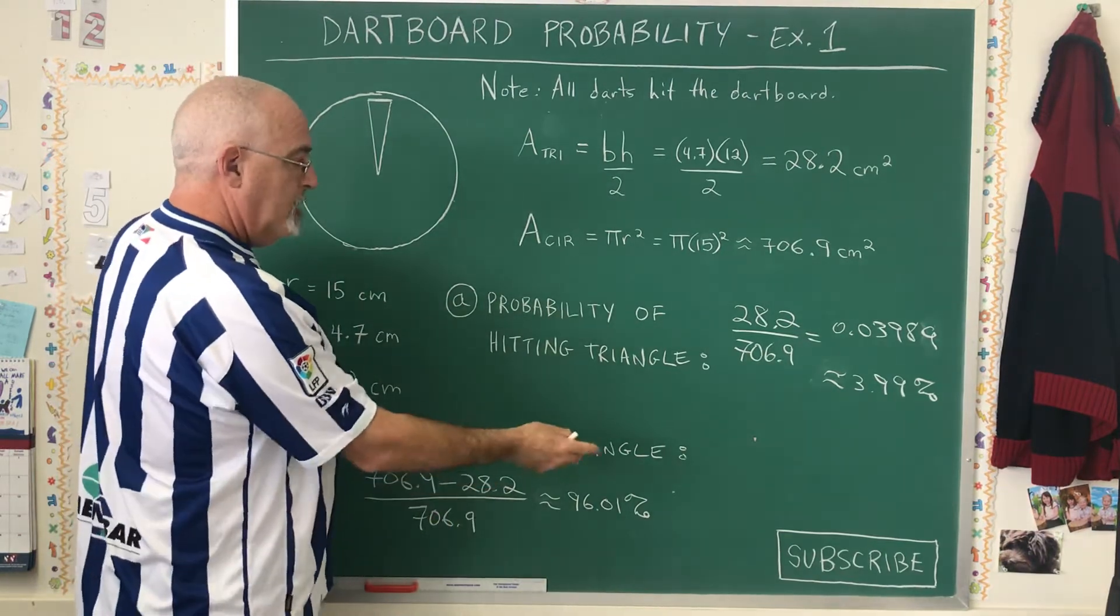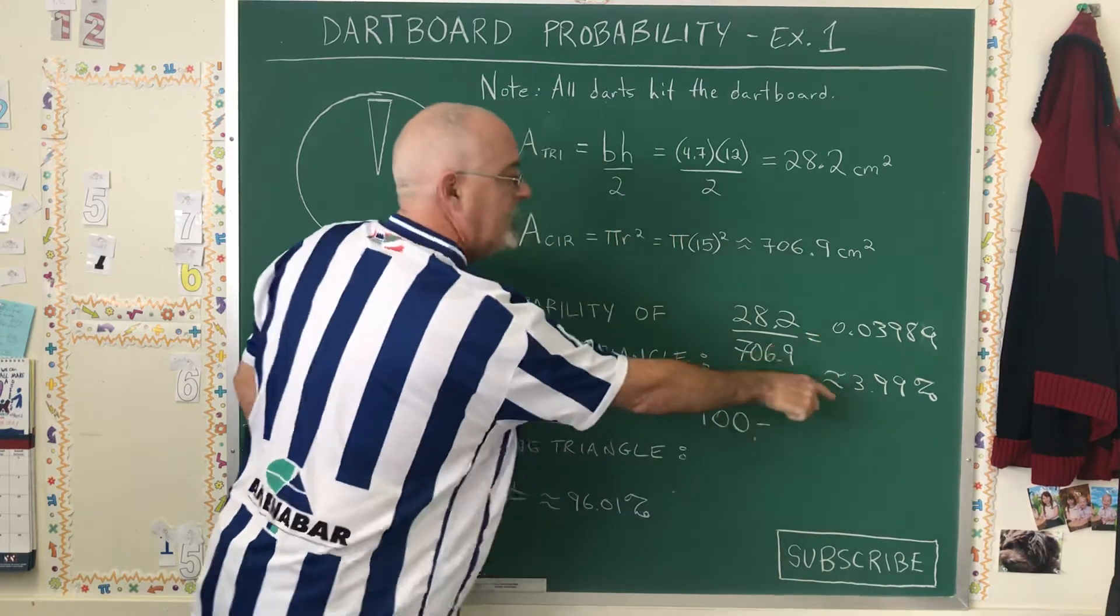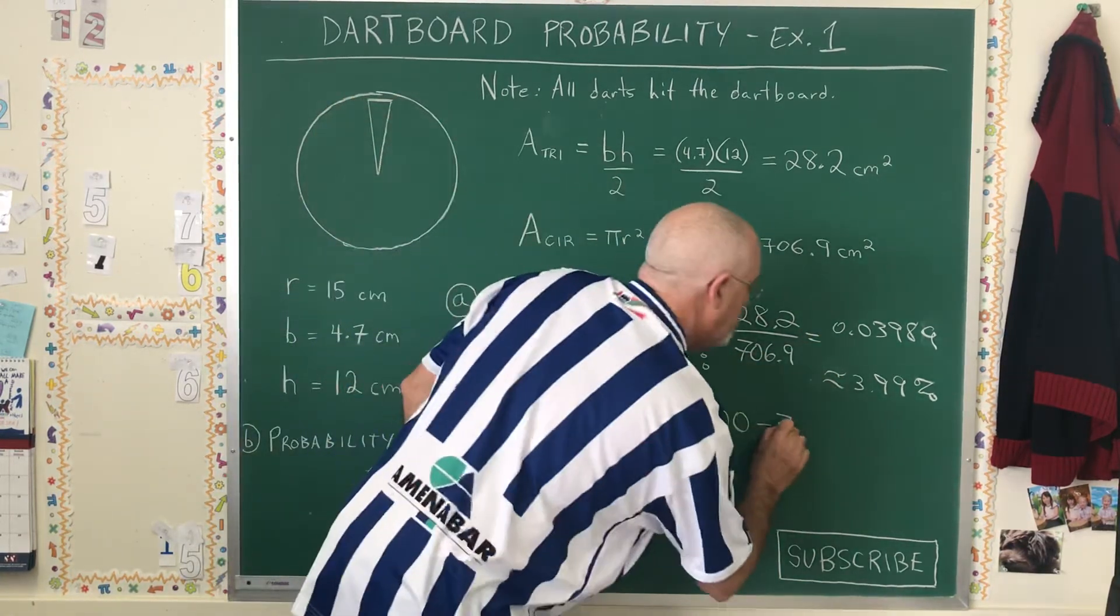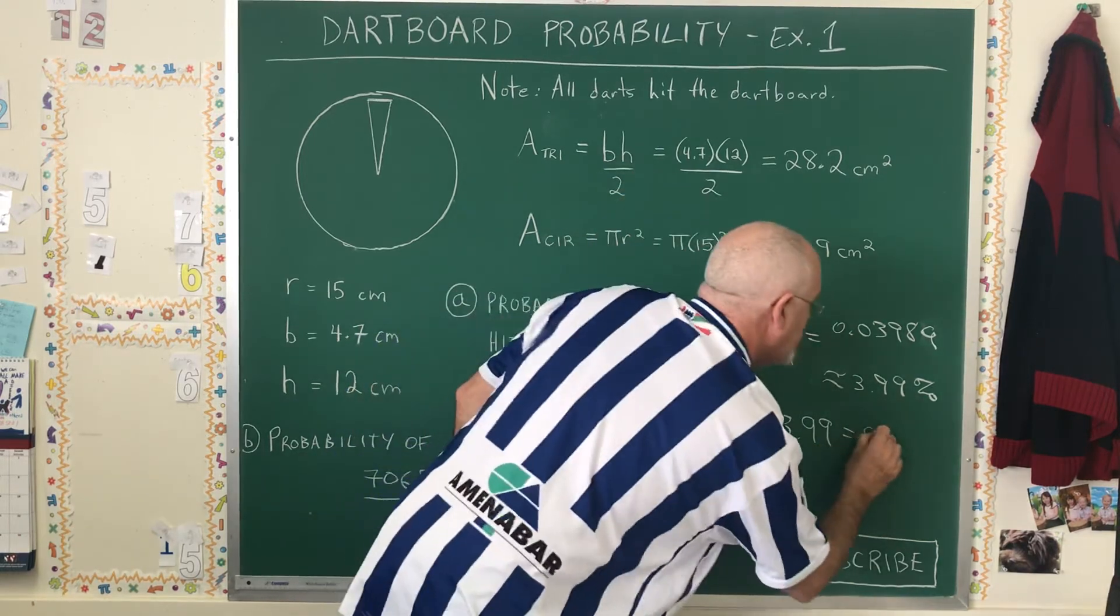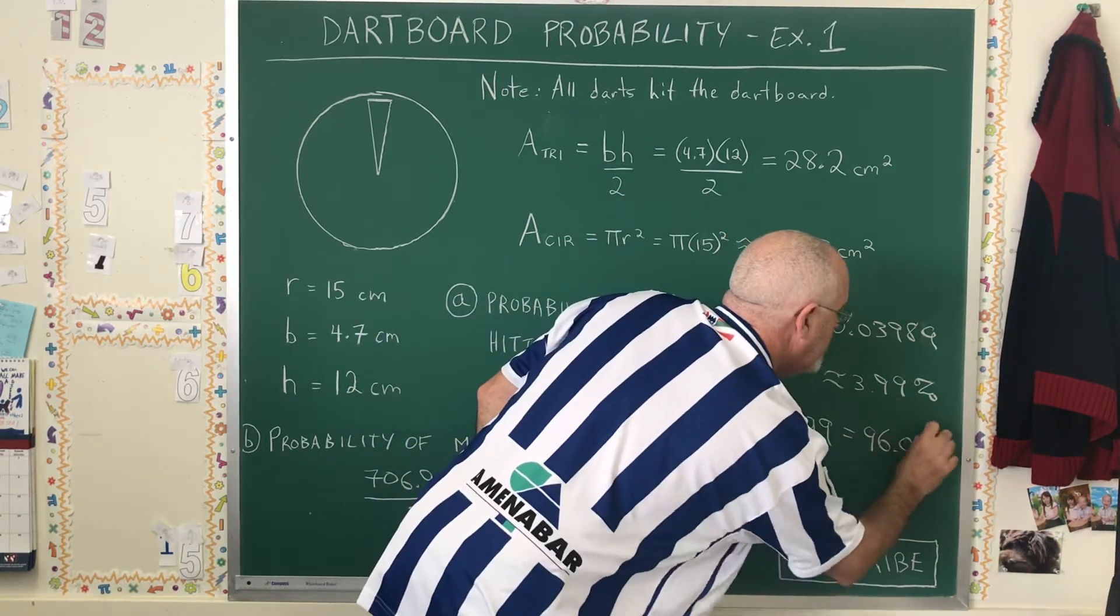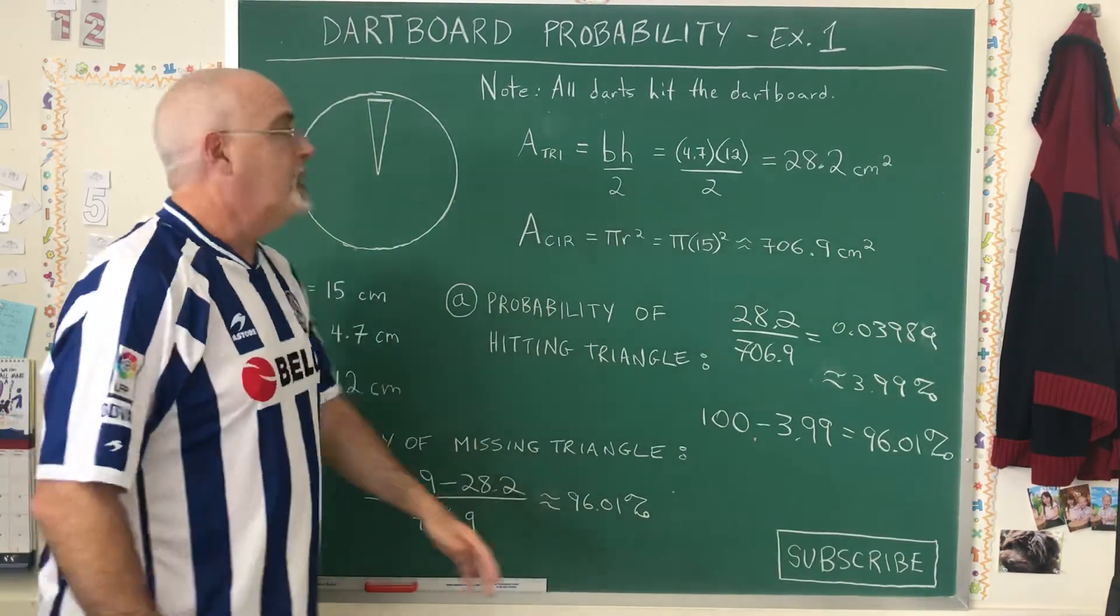So a shortcut to answer B is to simply say, well, 100% minus the answer I got from A—3.99—is equal to 96.01%. The same answer as I would have gotten if I had done this calculation.